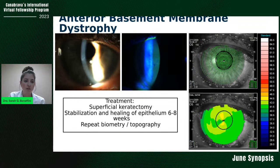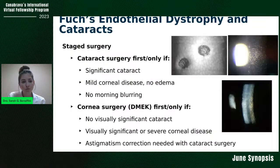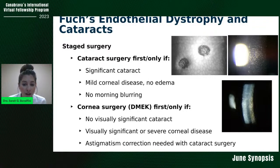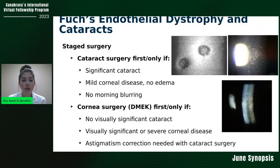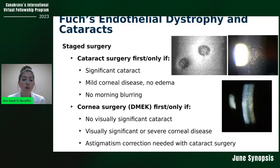Moving on to Fuchs endothelial dystrophy and cataracts — there are a few ways to approach this. For staged surgery, cataract surgery should be done first only if there is a significant cataract with only mild corneal disease and no edema. A key question to ask is about morning blurring — blurring in the morning that improves throughout the day is likely a reflection of Fuchs. Consider DMEK first only if there is no visually significant cataract. If there is visually significant or severe corneal disease with scarring, Descemet's folds, or if you need astigmatism correction at the time of cataract surgery, then do the DMEK first.